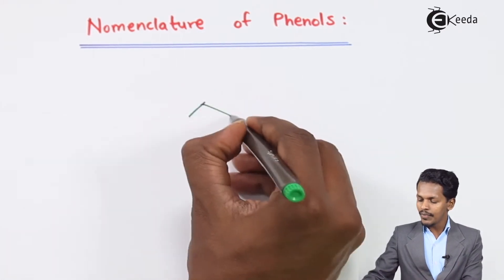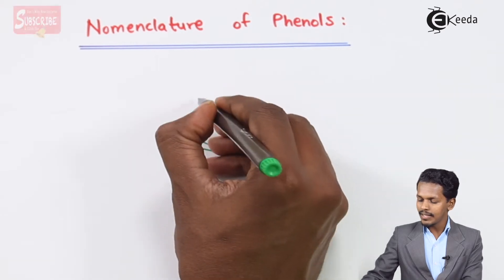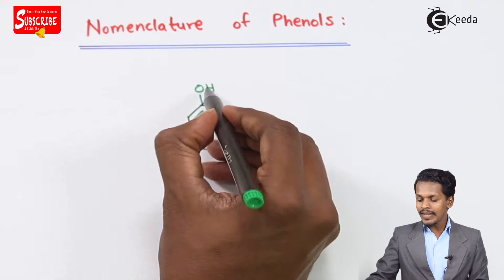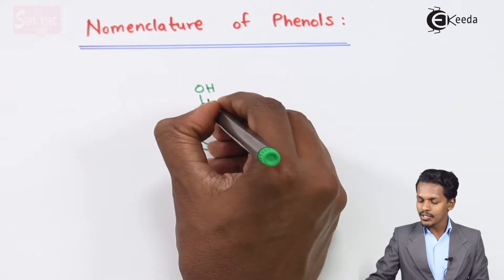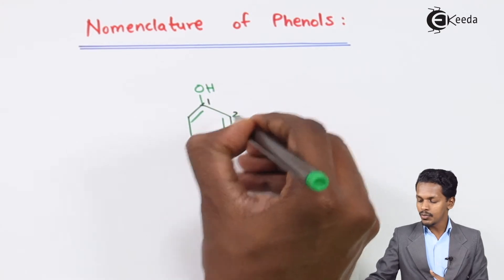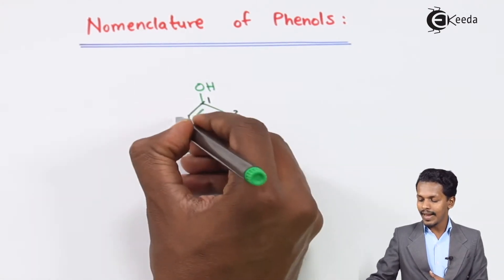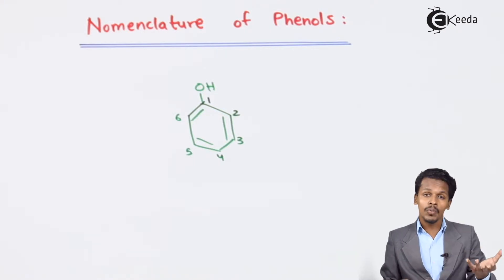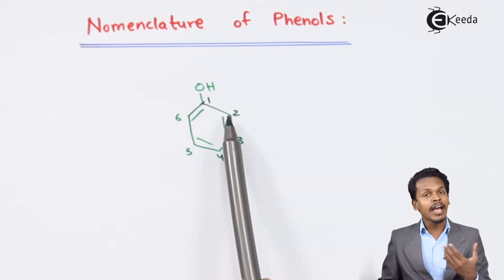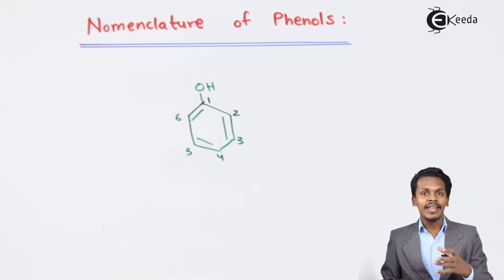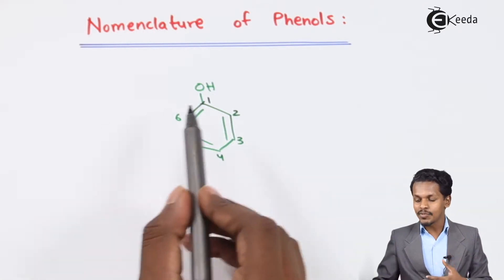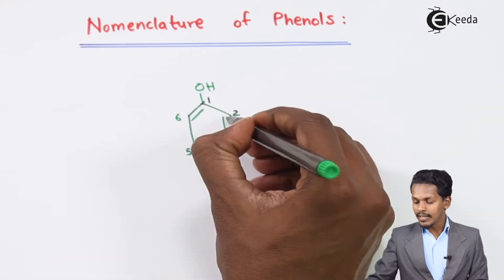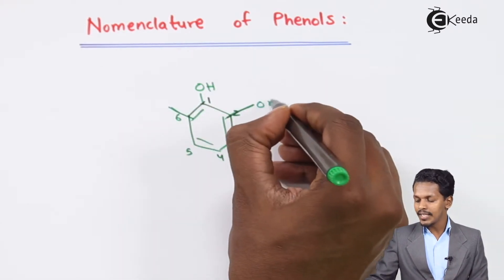If we talk about phenol, it consists of a benzene ring on which OH is directly attached. The carbon atom to which OH is attached is considered to be carbon number 1, then 2, 3, 4, 5, and 6. If a substituent — whether OH or a methyl group — is attached to carbon number 2, it is at the ortho position. Carbon numbers 2 and 6 are both considered the ortho positions.